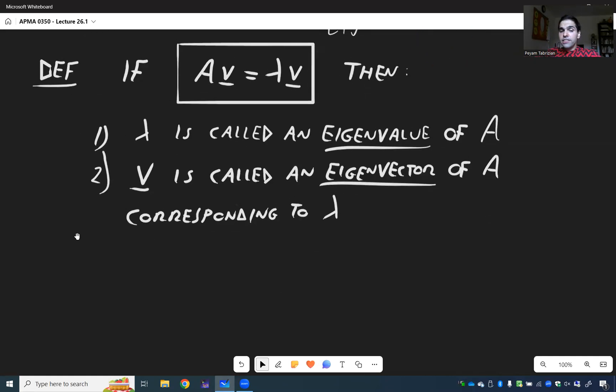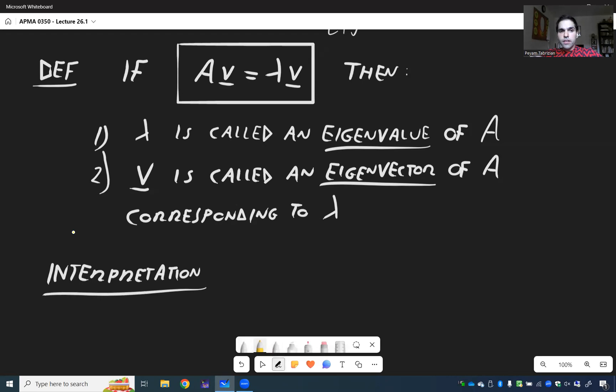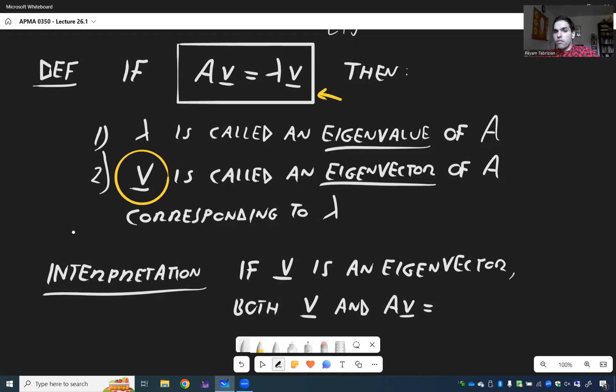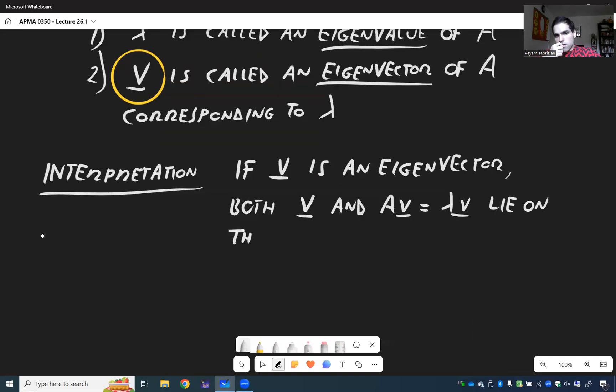And in fact, there's a very nice geometric interpretation of this. Because if V is an eigenvector, this equation here says that both V and the output AV, they lie on the same line. So if V is an eigenvector, both V and AV, just a multiple of V, lie on the same line. And let me illustrate this.